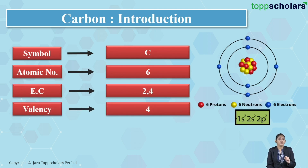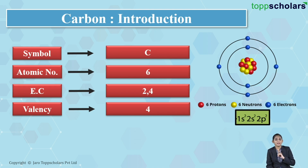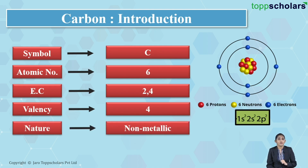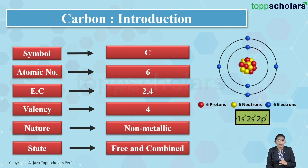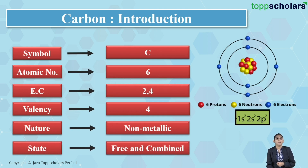The valency of carbon is 4, because carbon has 4 valence electrons. In order to become stable, it needs 4 more electrons, so we say the valency of carbon is 4. Carbon is a non-metal — it is non-metallic in nature — and it can exist in the free state as well as in the combined state.